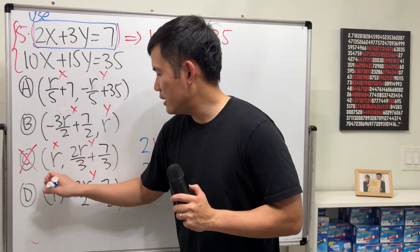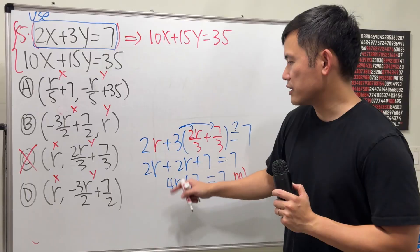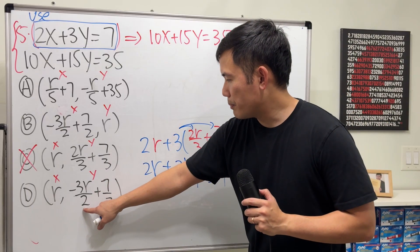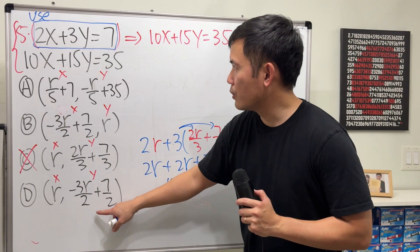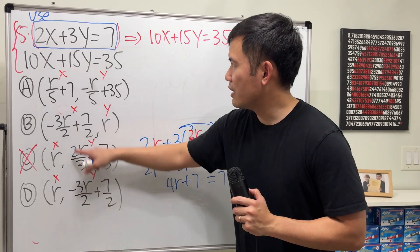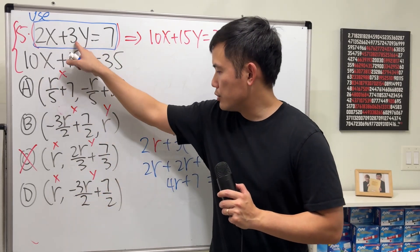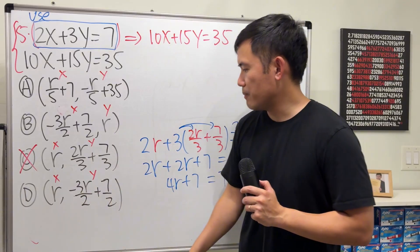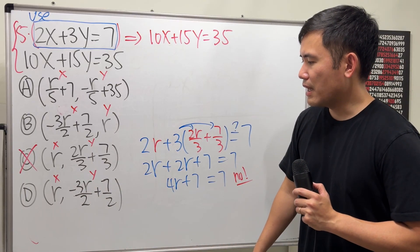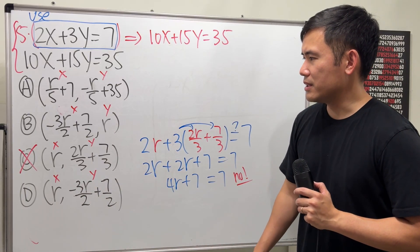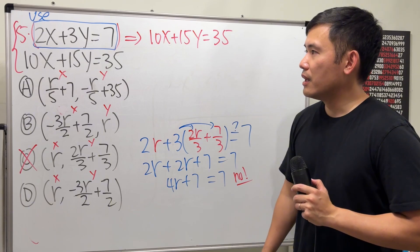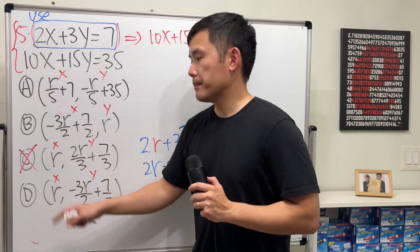Hmm. I'm not going to go for d either, because it's pretty much the same. Here, if I plug in the component y, I will get, it's not going to cancel nicely, because I will get 2r, and that's 3 times this. It's not going to be a whole number. It's not going to cancel also. Nope. I'm going to go with b. Try b.